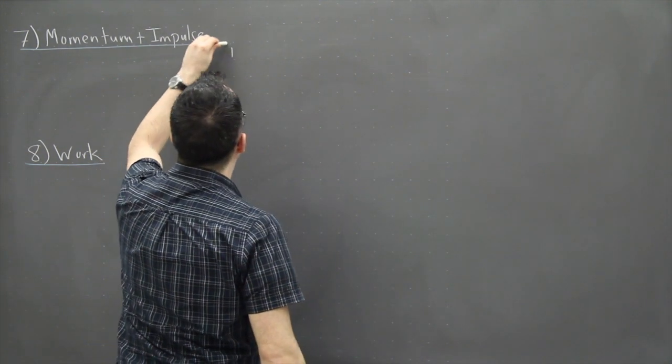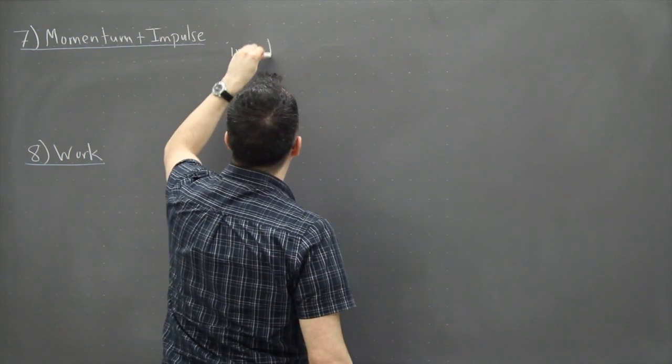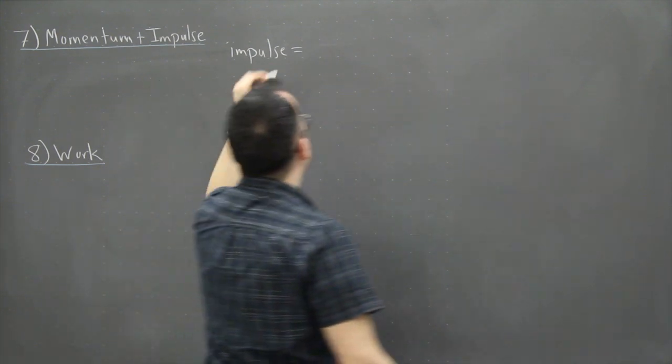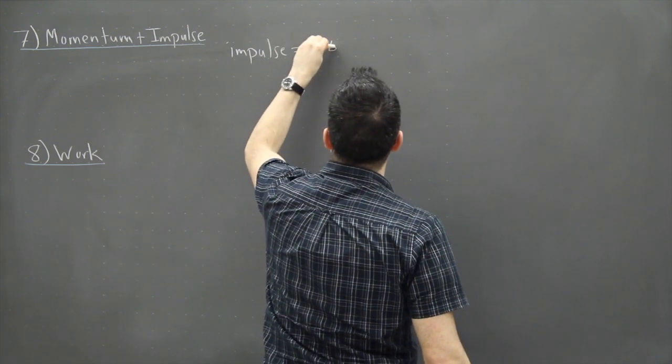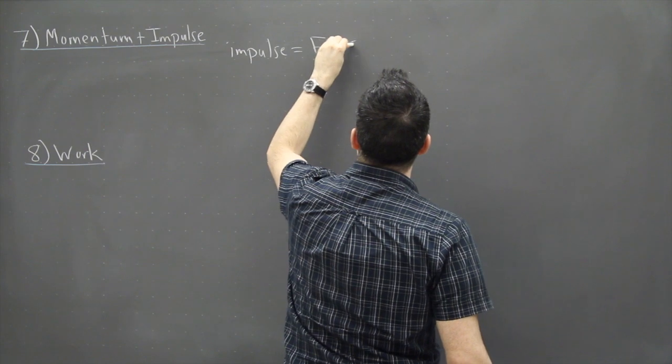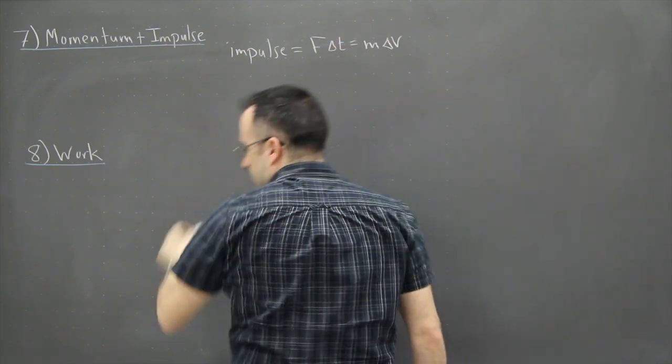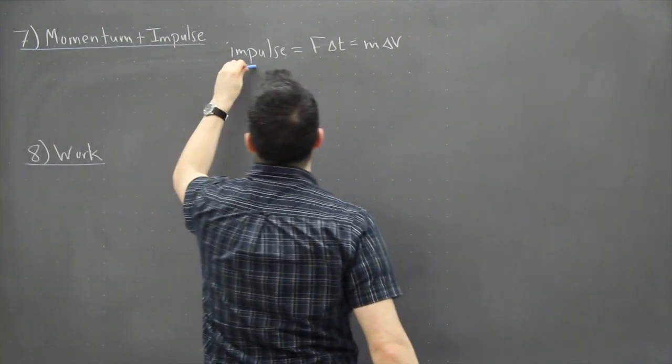So it suffices to just say that impulse, and this is an equation in your data booklet, says impulse equals F delta T and that's also equal to M delta V. So this is the equation for impulse.